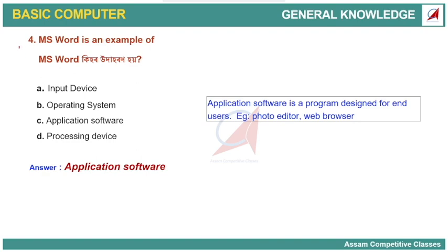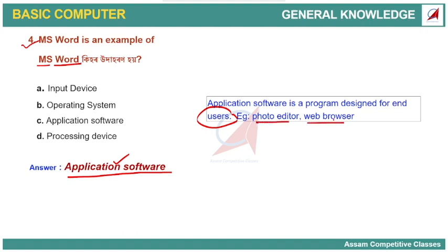MS Word is an example of application software. MS Word means Microsoft Word, which is application software. This program is designed for end users. Examples include photo editor or web browser — these are all part of application software.